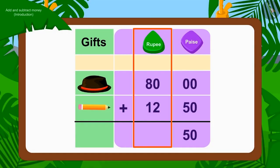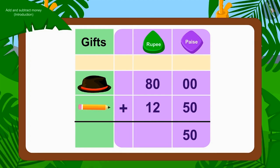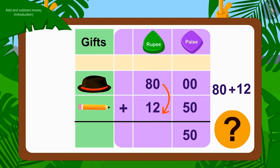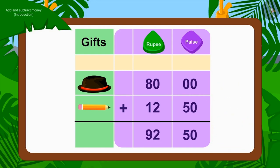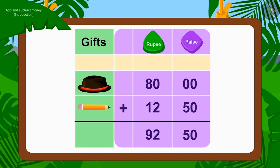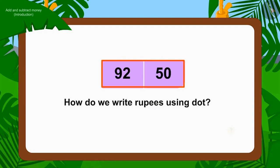Now we will add the rupee numbers. The cap costs Rs. 80.00. And the price of a pencil is Rs. 12. 80 added to 12 is Rs. 92.00. In this way, the total value of both the items became Rs. 92.00 and 50 paise.